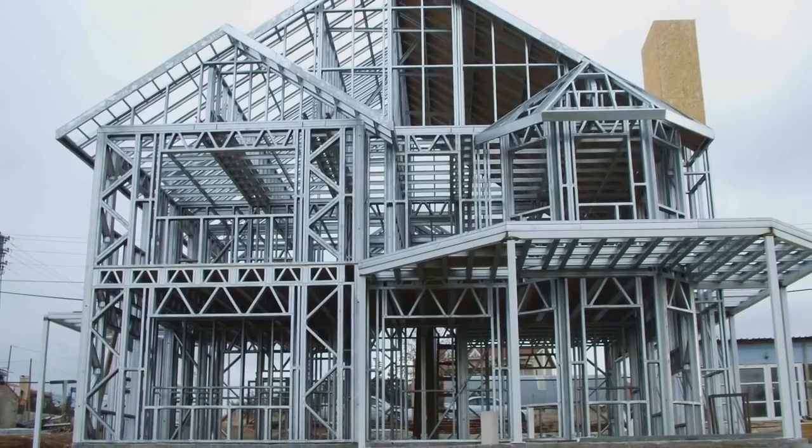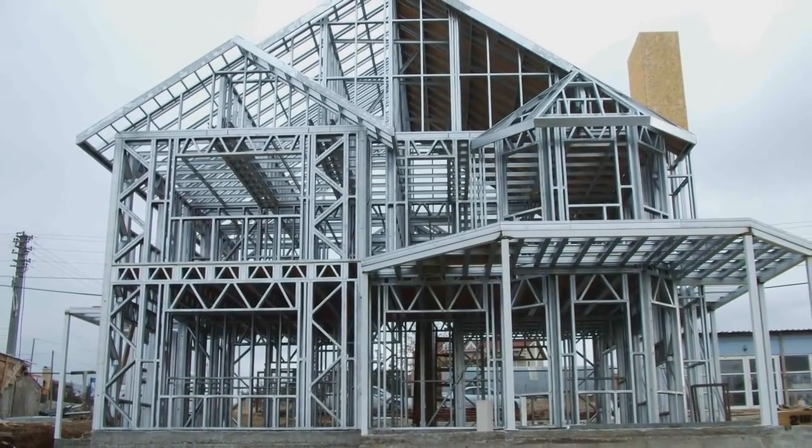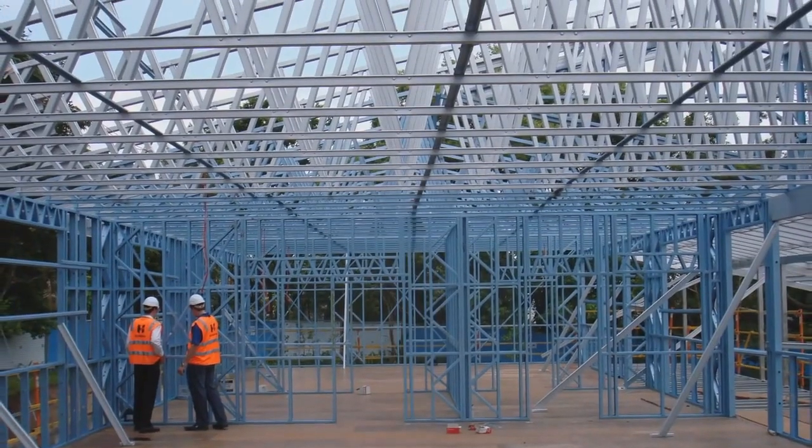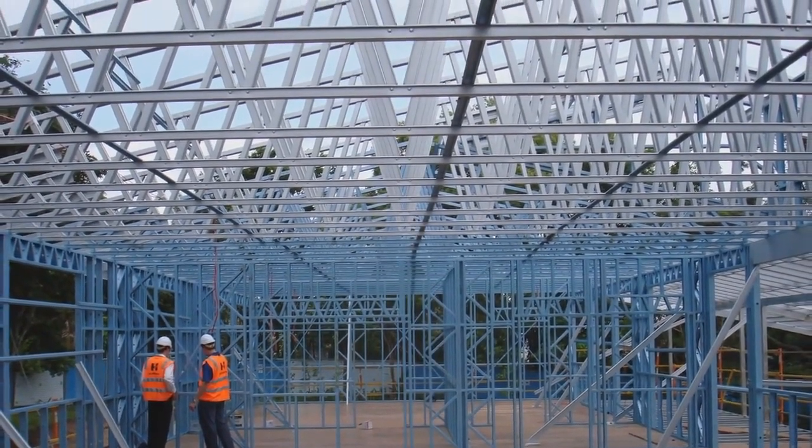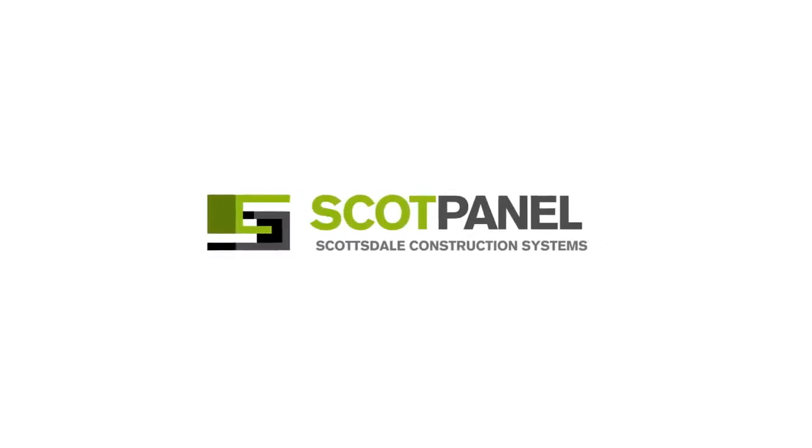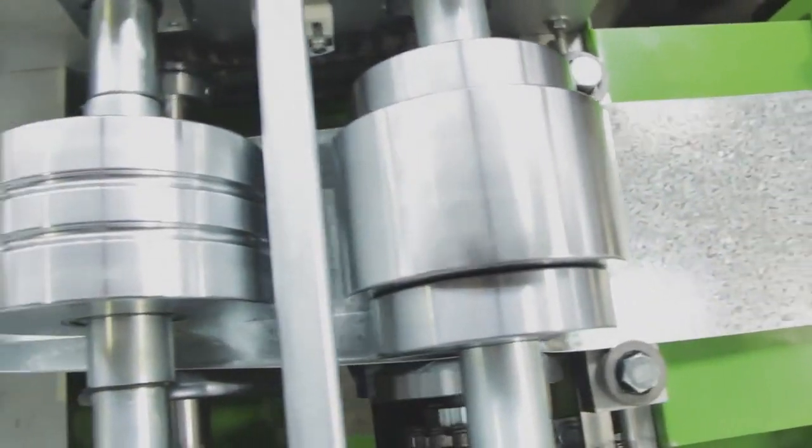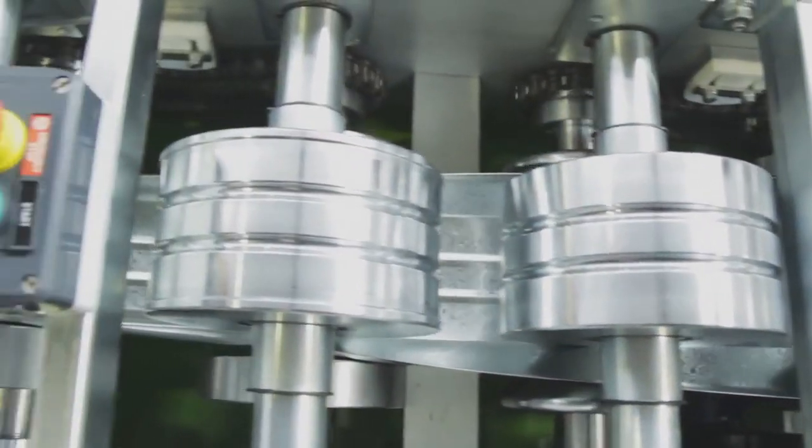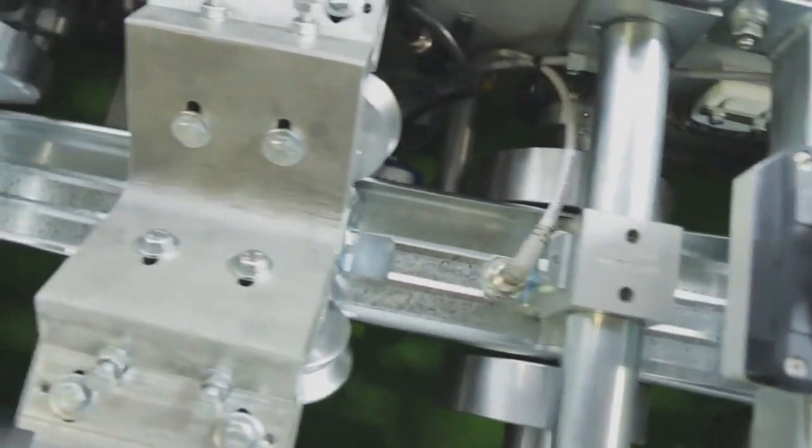There are two product lines: panelized fabrication systems and truss fabrication systems. The panelized roll forming system can be ordered in 63mm, 70mm, 76mm, 90mm and 140mm C section profiles.